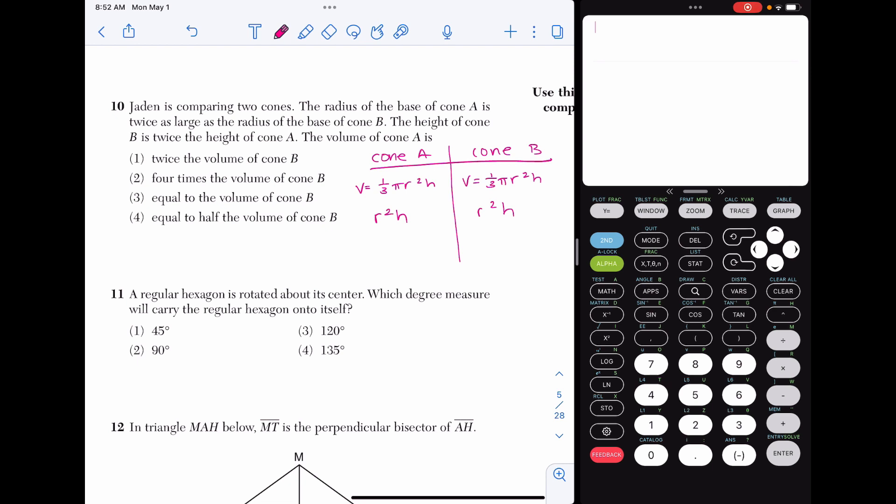We know the radius of cone A is twice as large as the radius of cone B. So let's say we make the radius of cone A two, and therefore we'll make the radius of cone B one. The height of cone B is twice the height of cone A. So let's say I make this one and this two. The volume of cone A is four, the volume of cone B is two, and now it's easier for me to see that choice one is correct. The volume of cone A is twice the volume of cone B.